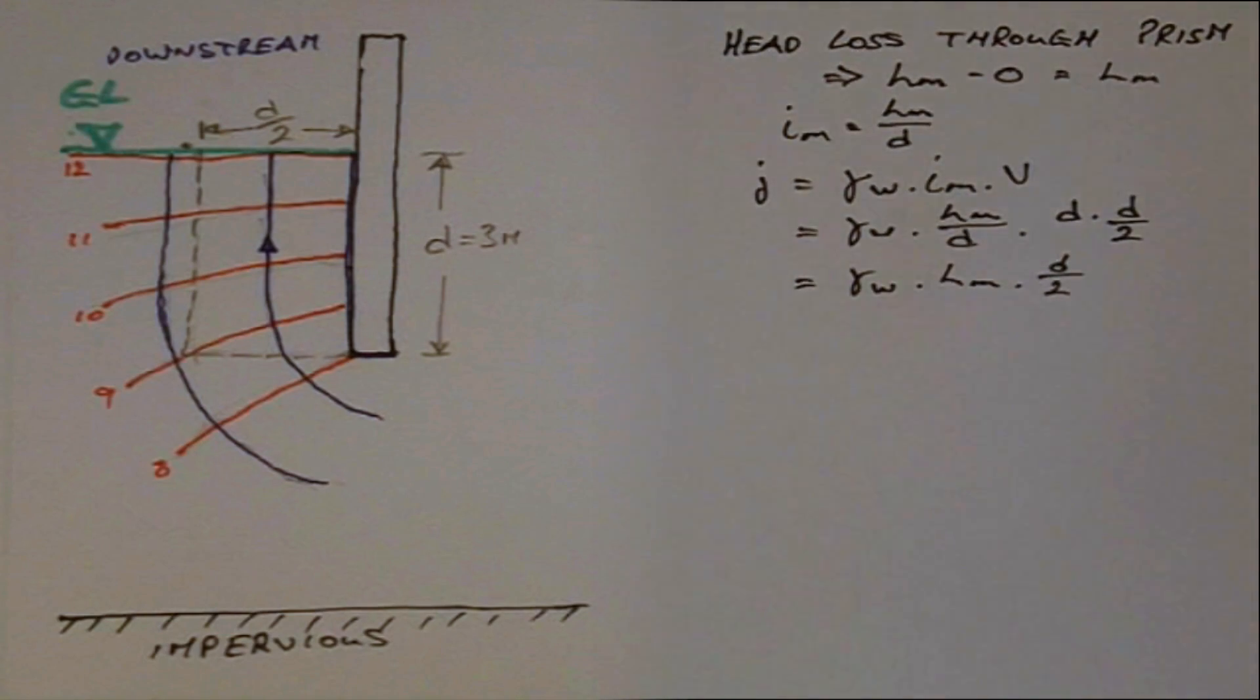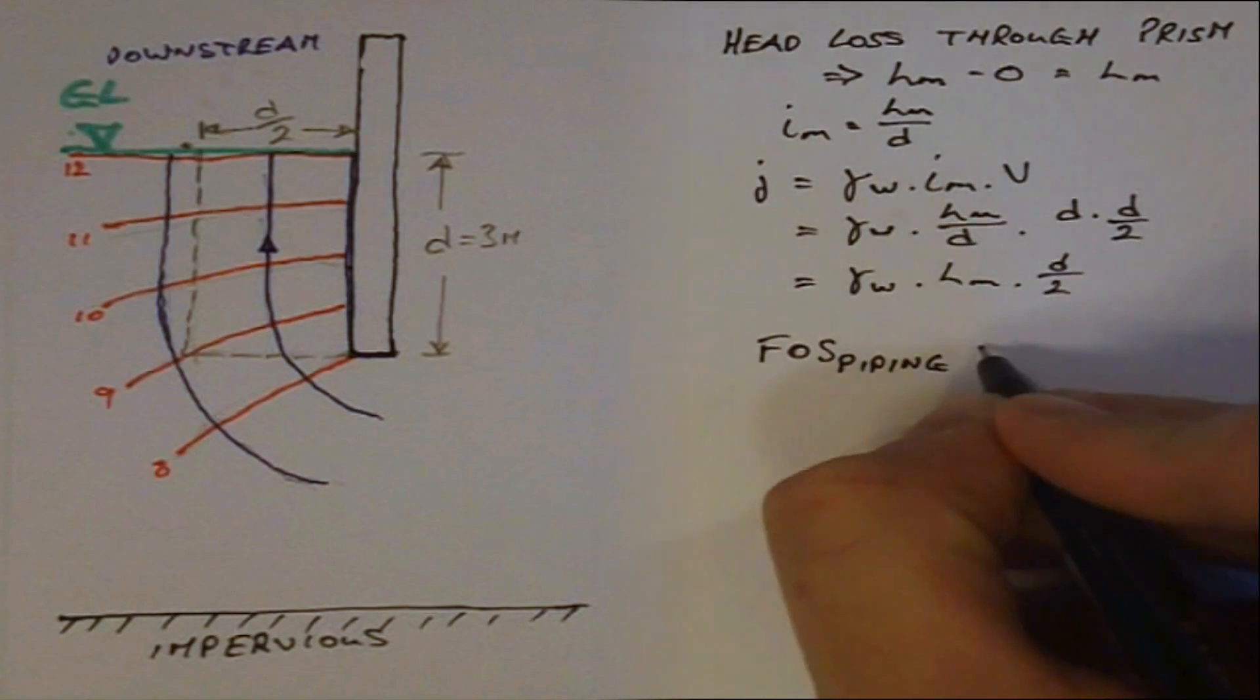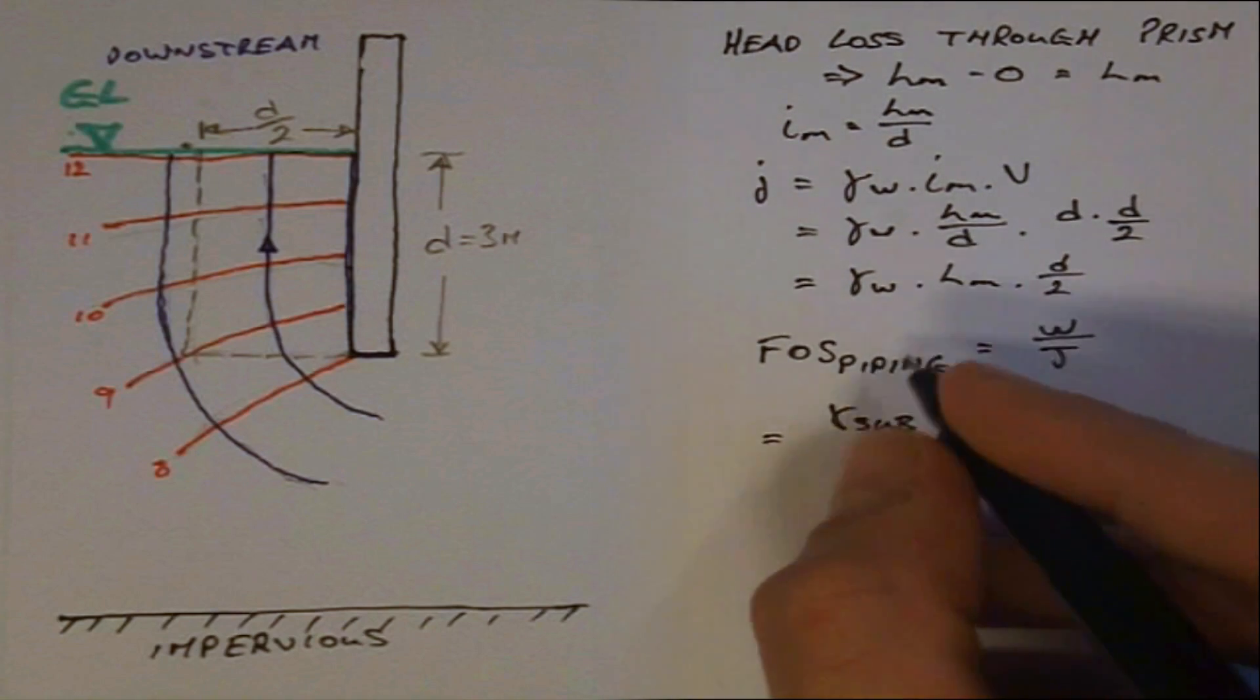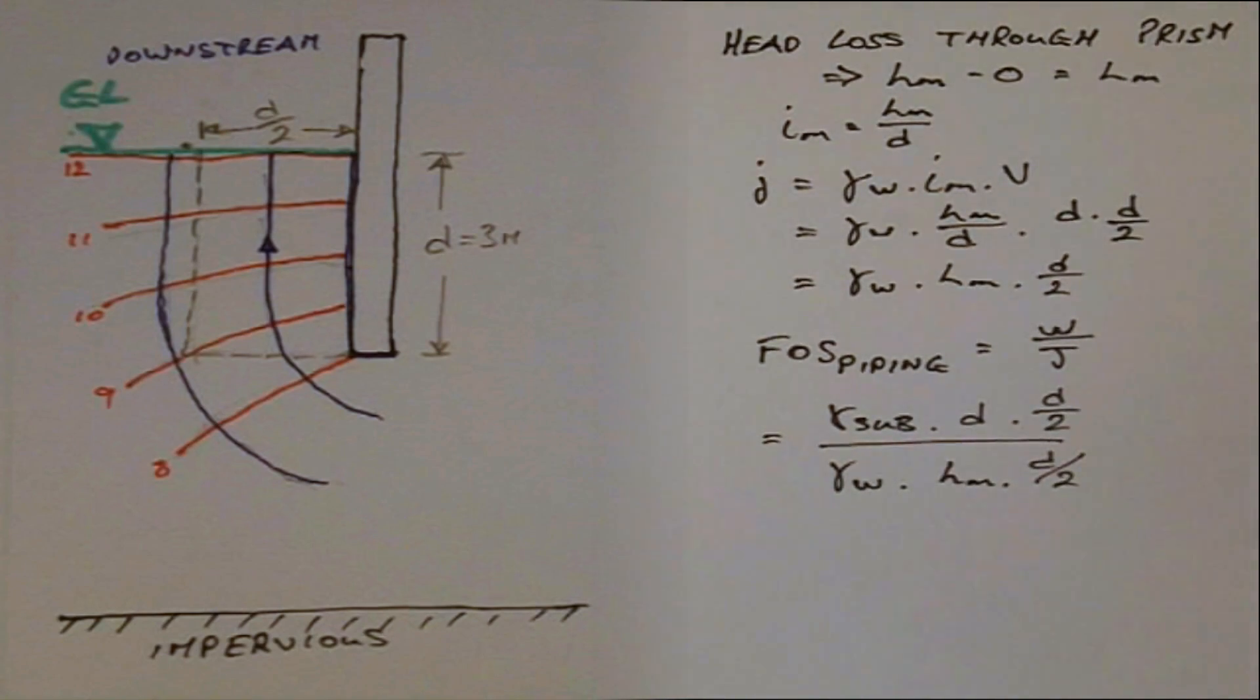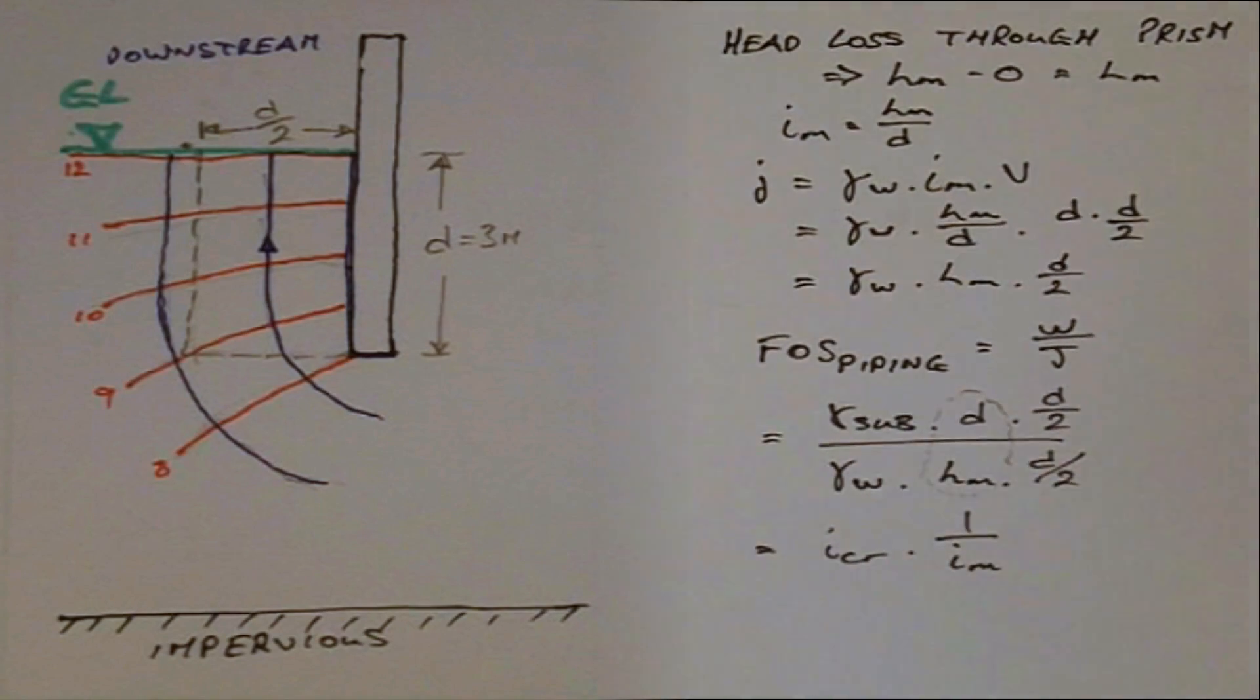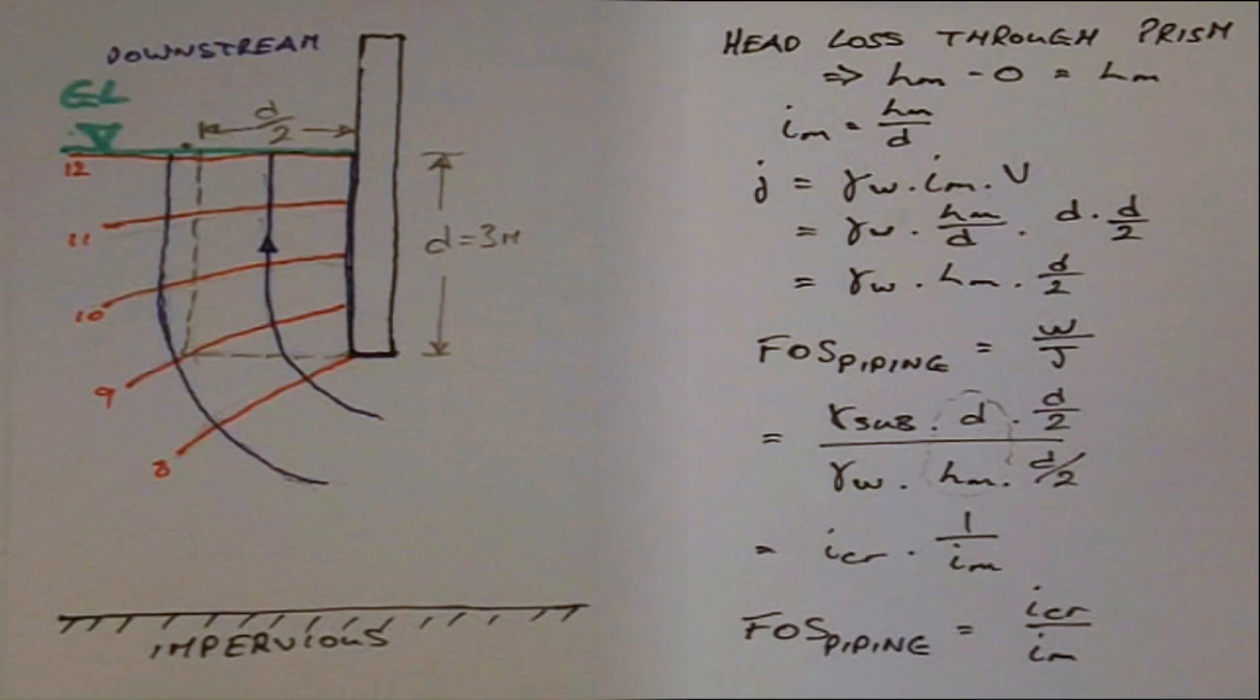The factor of safety against a piping failure is given by the ratio of the effective weight over the seepage force. From this we can see that the submerged unit weight over the unit weight of water is I critical, and D over H mean is the inverse of the mean hydraulic gradient. So the factor of safety is simply the critical hydraulic gradient over the mean hydraulic gradient.